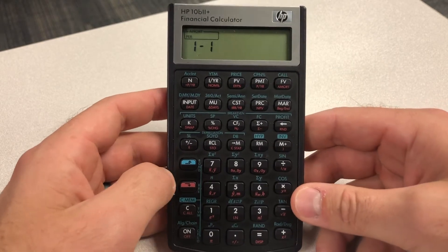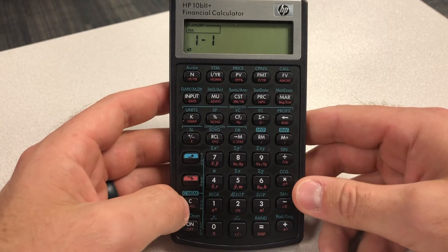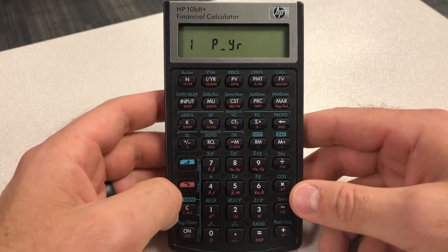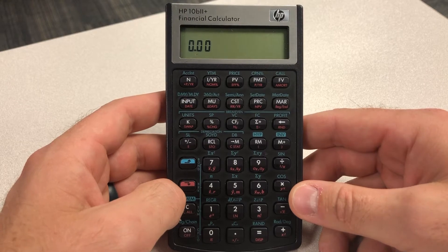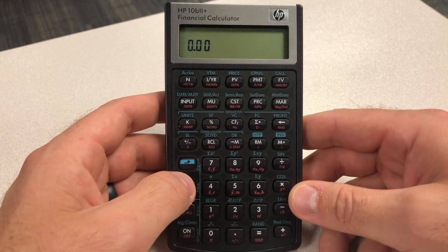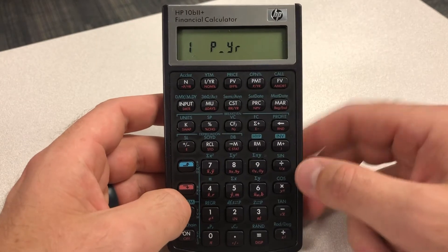First step, clearing out our calculator. So shift, clear all. Remember, we always want to do that. And that helps us understand which periods per year we're in. So again, if I hit shift, clear all, we see that we're in one period per year.